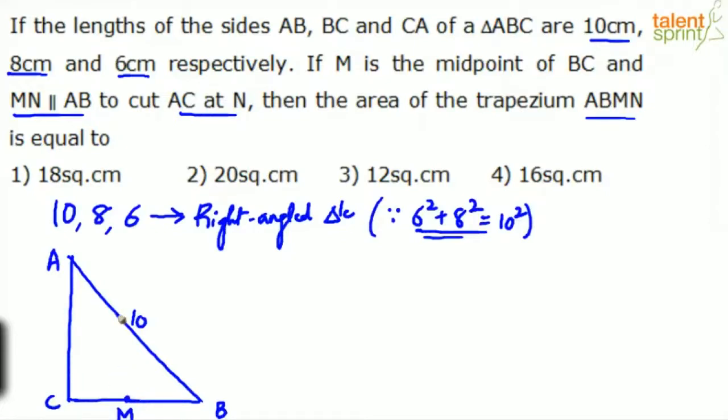Now M is the midpoint of side BC and MN is parallel to AB. What does it mean? You should draw a line from M which is parallel to AB and it cuts AC at N. See, this side AC will be cut by that line at the point N and MN is parallel to AB. Are you getting it? MN is parallel to AB.